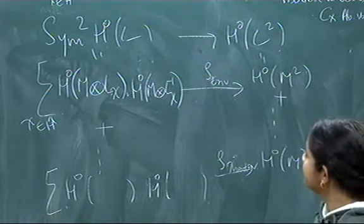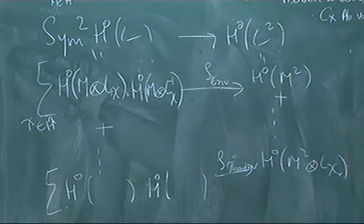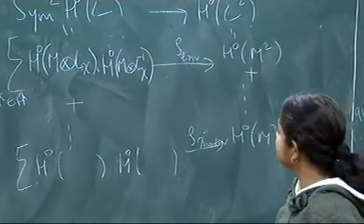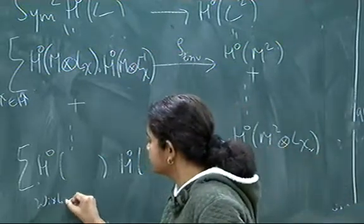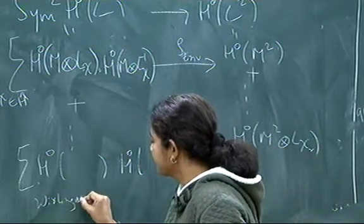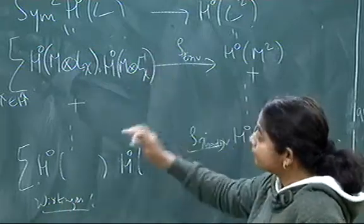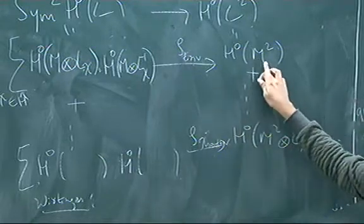For example, so for example, if you are just looking here. There is this theorem of Wirtinger, which actually appeared in Mumford's paper on Prym varieties. Which essentially says that, because, yeah,